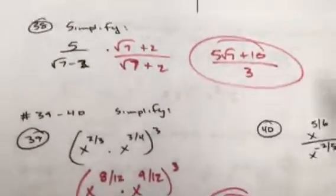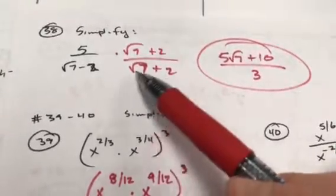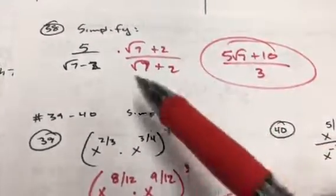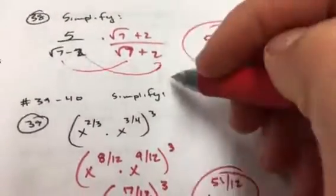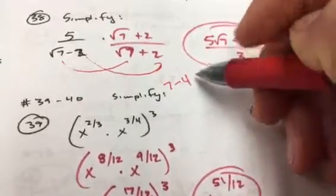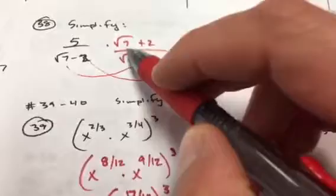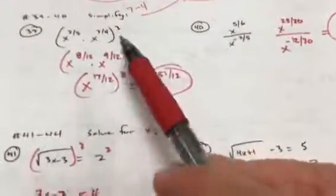Number 38: if you want to get rid of a root in the denominator, multiply by the conjugate. Multiply top and bottom by (√7 + 2); you only need the first and last of FOIL for the denominator, giving 7 minus 4 = 3. Up top, just multiply to get the numerator.